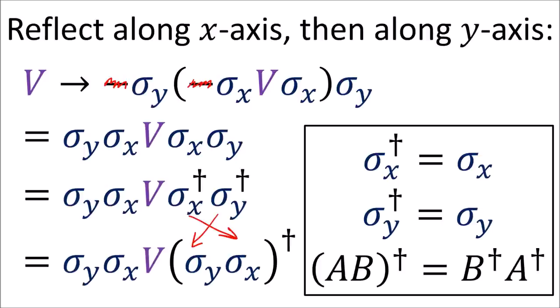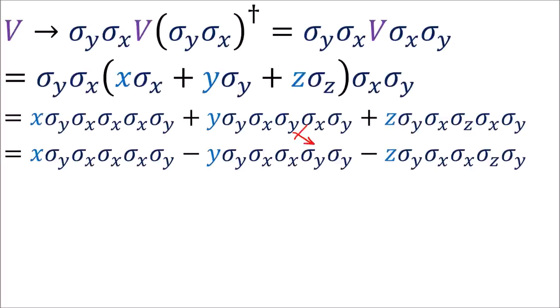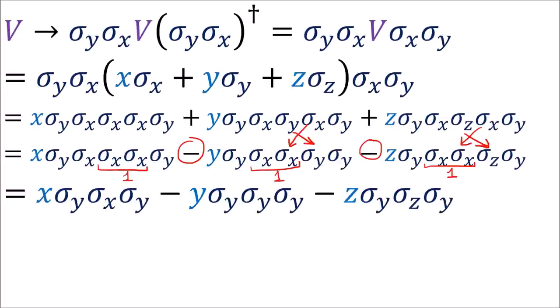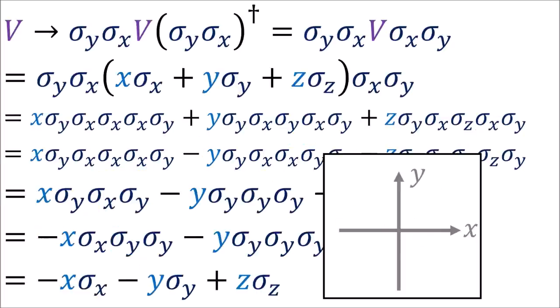We also know from linear algebra that we can replace a product of daggered matrices if we reverse their order and dagger the entire product. So daggering a pair of sigmas is the same as reversing their order. This is the formula for doing a 180-degree rotation in the xy plane. If we work through the algebra, we find that the x and y components get reversed, as expected for a 180-degree rotation.